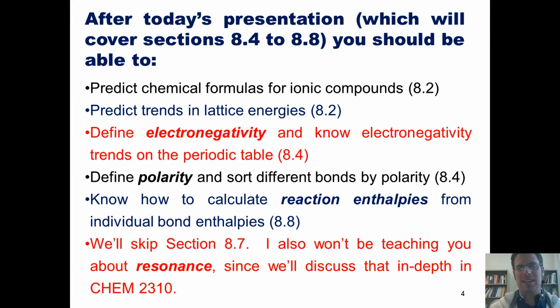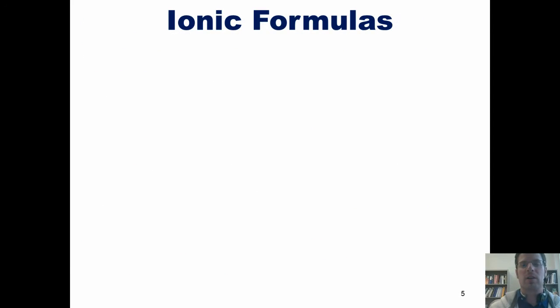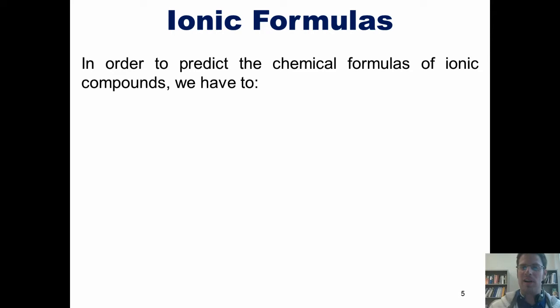So with that said, we'll go ahead and get started by talking about ionic formulas. Now you should remember that a covalent compound, also called a molecular compound, is one in which you have two non-metals bonded to each other. If you have a metal bonded to a non-metal, and remember that non-metals are located in this small triangular section on the right side of the periodic table, and metals comprise the bulk of the remaining elements on the periodic table. So please keep in mind that distinction. Now in order to predict the chemical formulas of ionic compounds, we have to follow these steps.